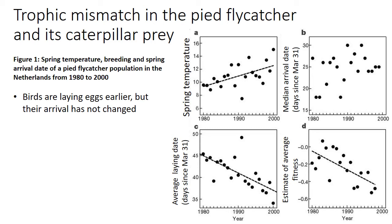The pied flycatcher's ability to respond is constrained — even though they're laying eggs earlier, there's a limit, because they must arrive first. The time between arrival and egg-laying is getting shorter and shorter, and at some point they won't be able to respond further if they don't arrive earlier. This study was one of the first to go beyond documenting behavioral change and instead try to relate that change directly to a population-level impact.